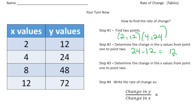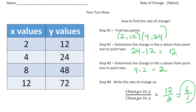Step three: determine the change in x-values — going from 2 to 4, so 4 minus 2 gives a change of 2. Step four: write the rate of change as a ratio — 12 over 2, which reduces to 6 over 1. The rate of change is 6 to 1.